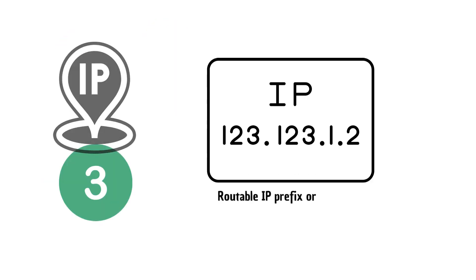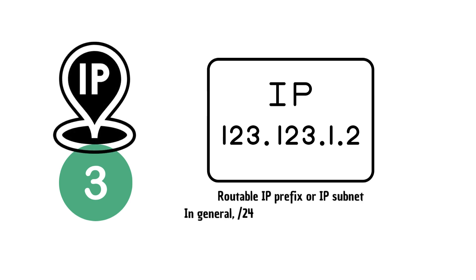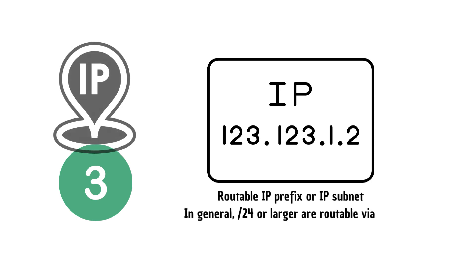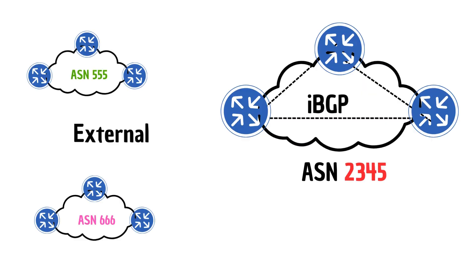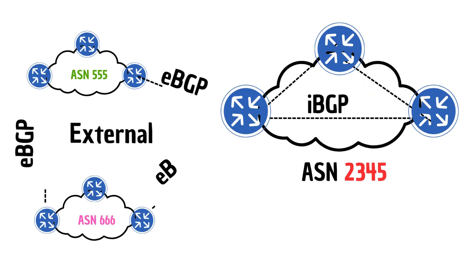The third thing is the routable IP prefix, or IP subnet. If you don't have one, your ISP will assign you one, or you can probably buy one for your organization.